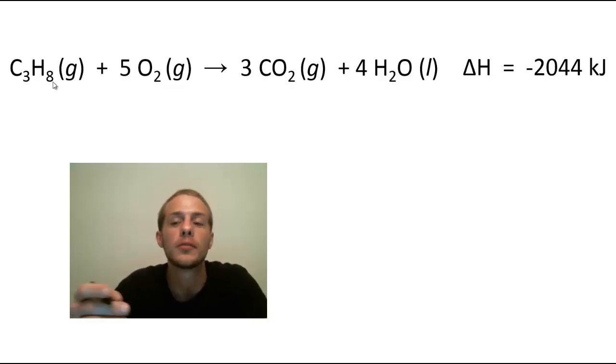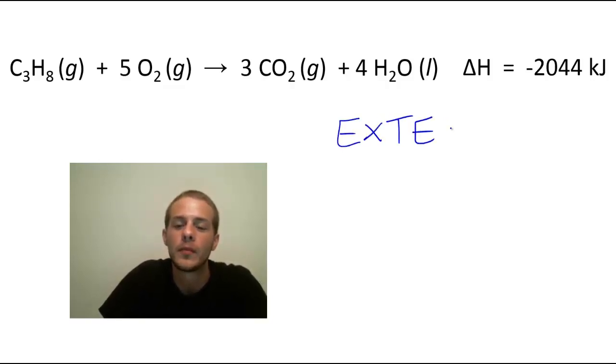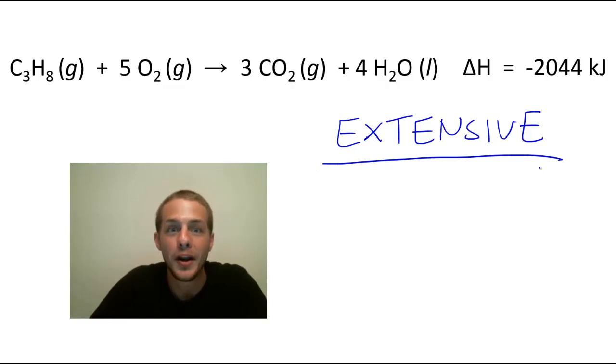How do we use that to figure out how much heat is going to be given off when we burn a given amount of propane for instance? Well the thing about enthalpy changes is that it is what we call an extensive property. It's an extensive property which means that it depends on the amount of matter. So in other words, a thousand grams of propane is going to release a lot more energy than just one gram of propane. So we need to find a way to turn this extensive property into an intensive property that does not depend on the amount of matter.